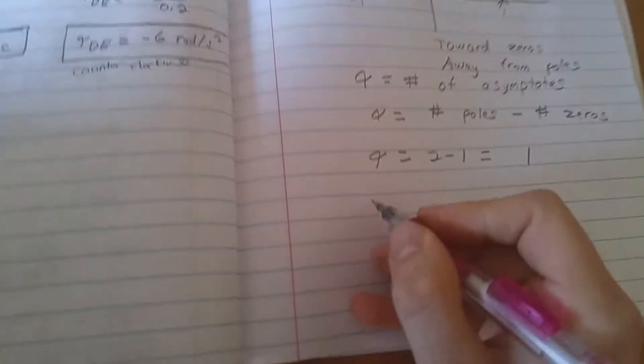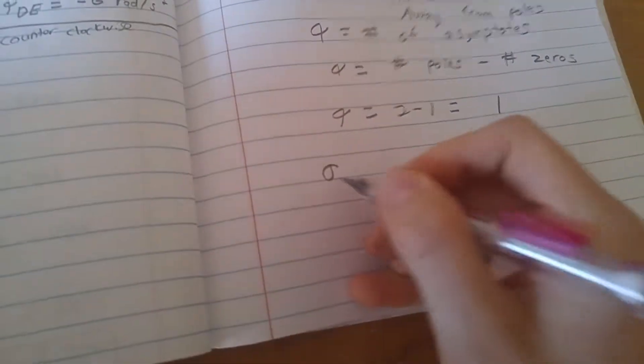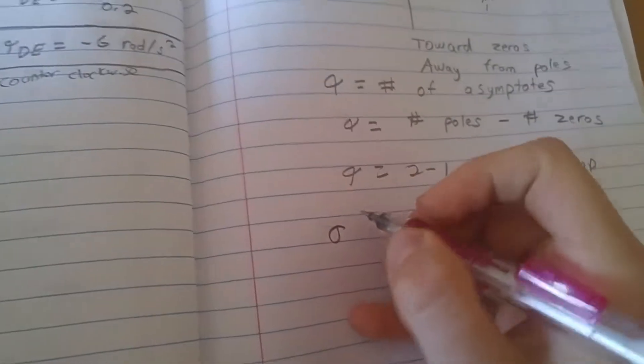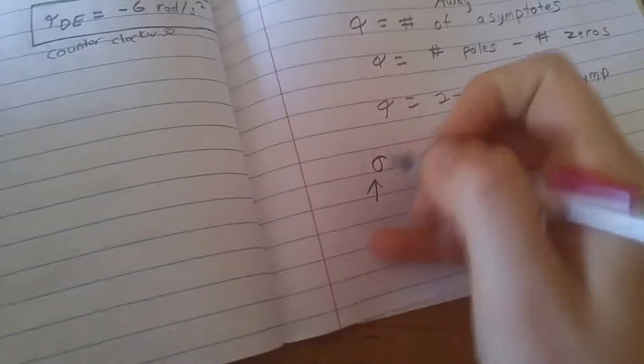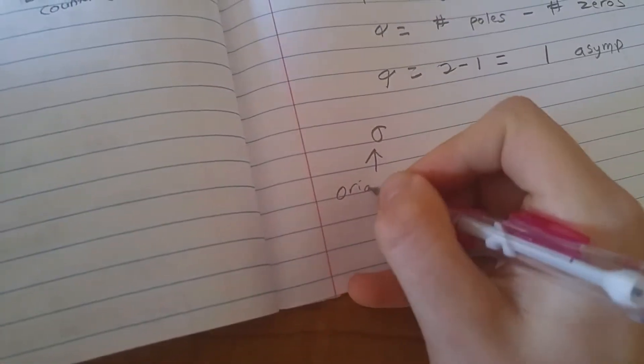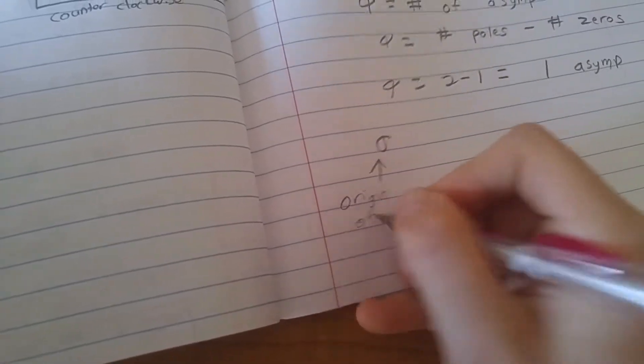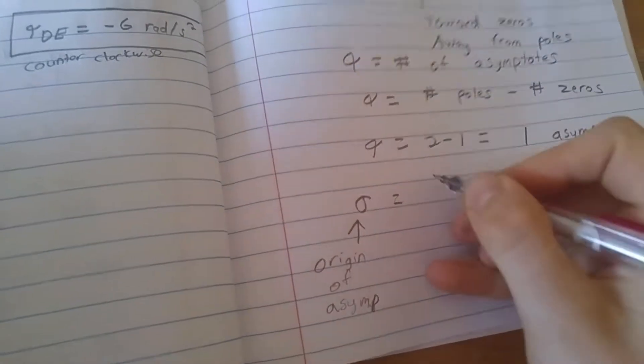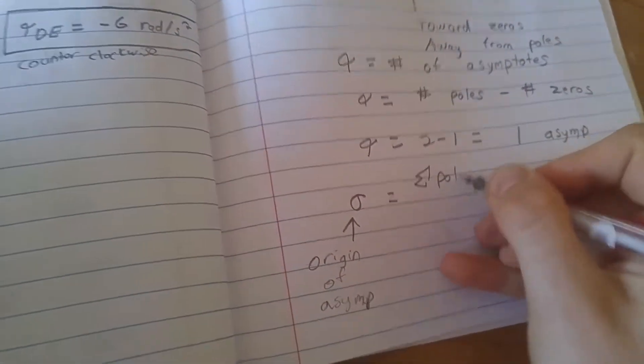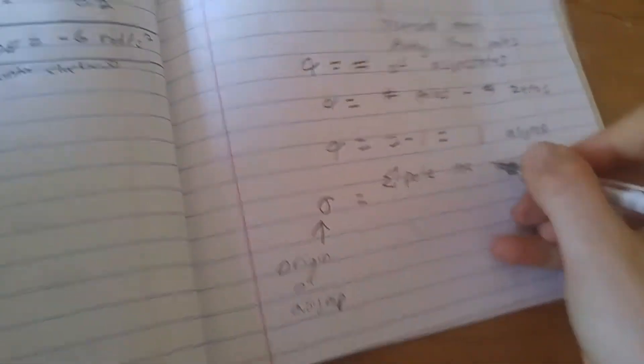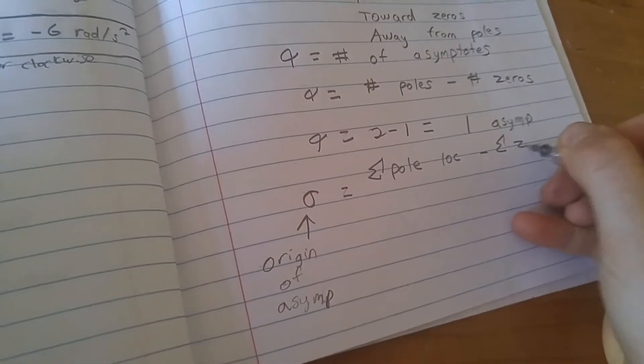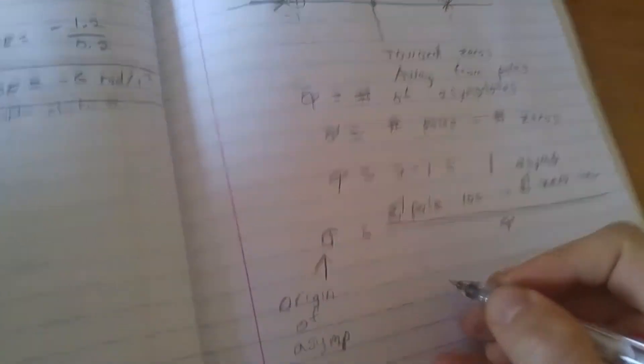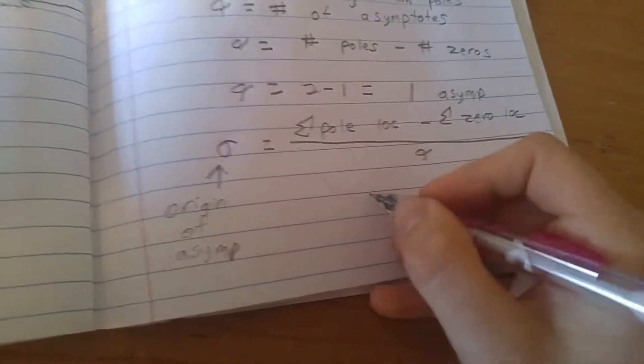Then we can use alpha to figure out the origin of our asymptote. So this means we have one asymptote. And then sigma is going to be the origin of the asymptote. This is equal to the sum of all pole locations minus the sum of all zero locations divided by alpha.